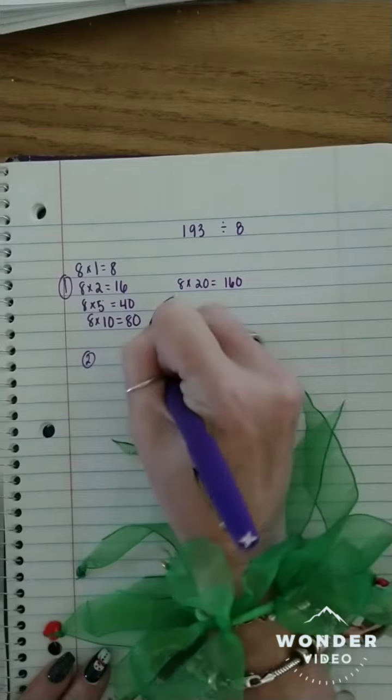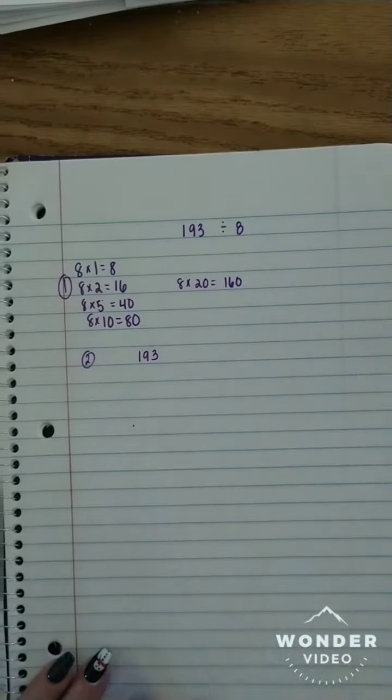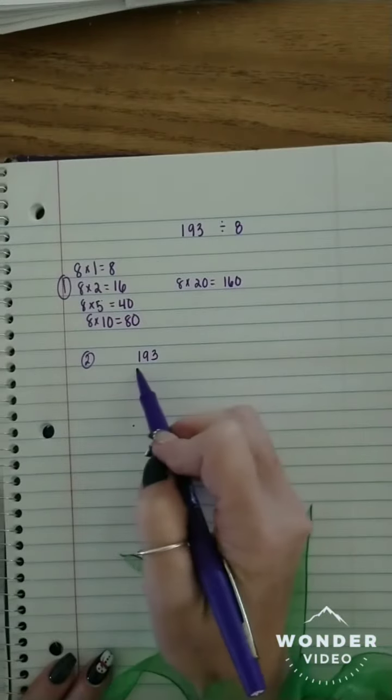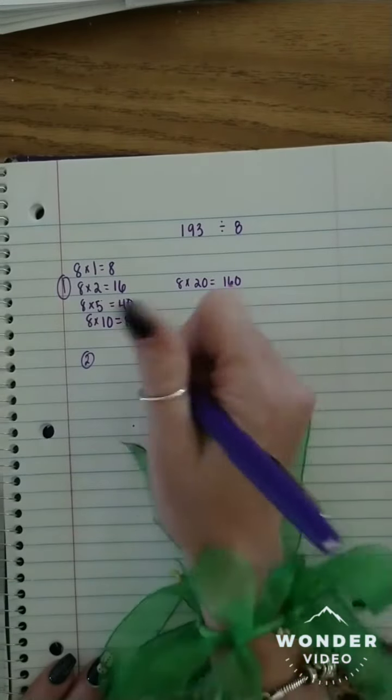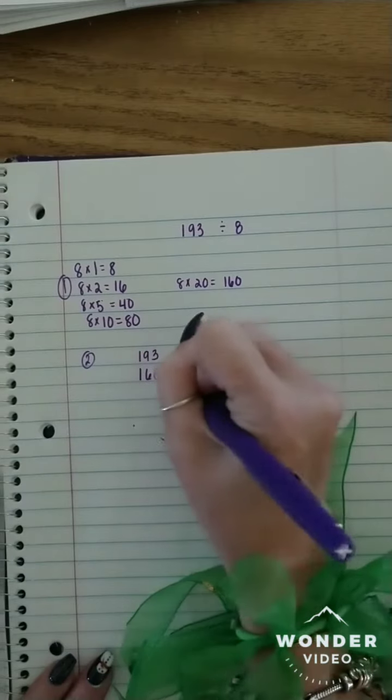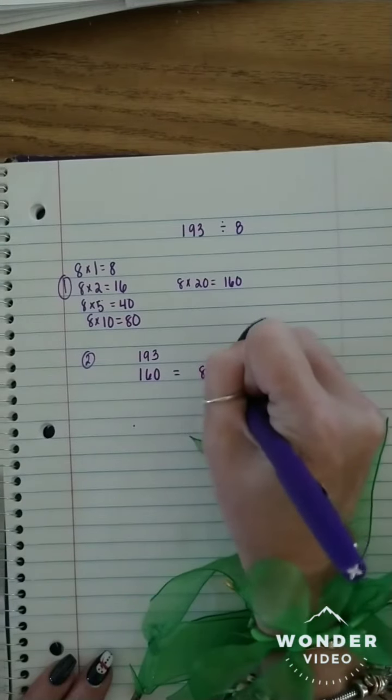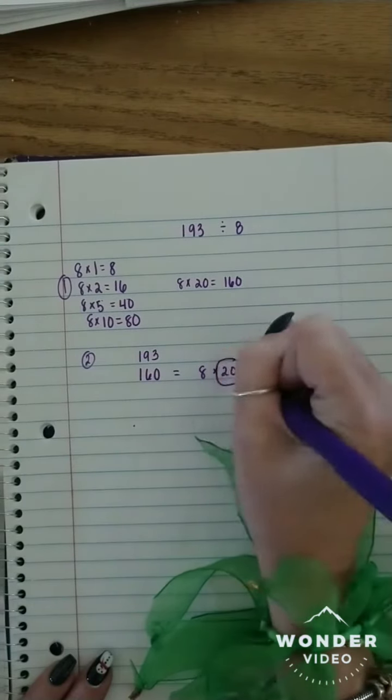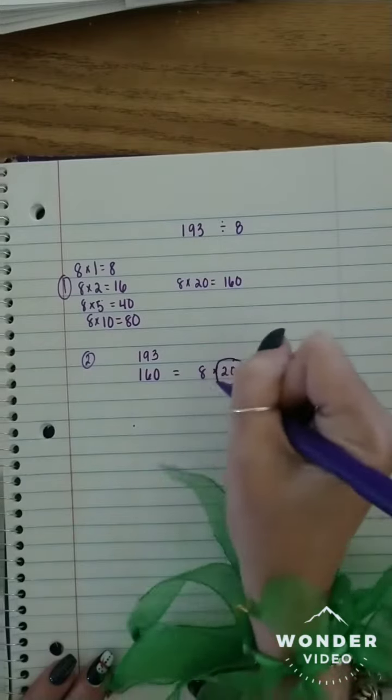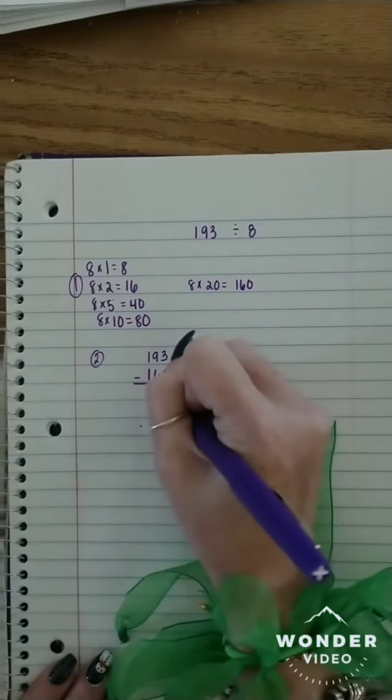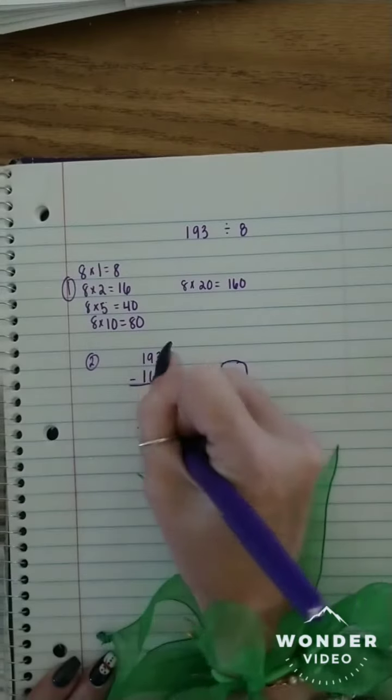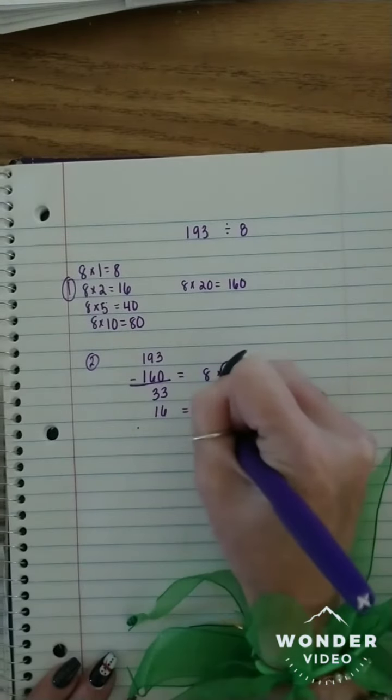Step two is subtract out your partial quotients because you're pulling out partial pieces. So I'm going to look at 193. My biggest piece I can pull out is 160. And that is equal to 8 times 20, and I circle my 20 because that's how many times I use that 8. Subtract. That leaves me with 33. Alright, so I'm going to go to 16 here. And that's 8 times 2.